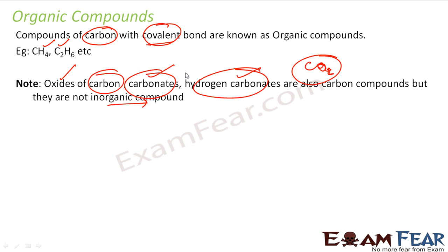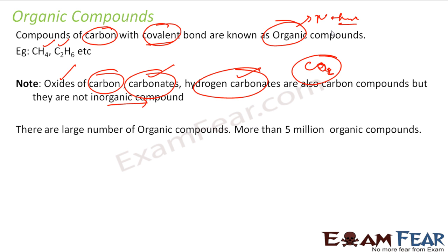Other forms of carbon are usually called organic compounds. You must be wondering why this word 'organic' — organic means something from nature. Why is this word 'nature' linked to a carbon compound? We will study that also. But first, a fact: there are more than 5 million organic compounds.